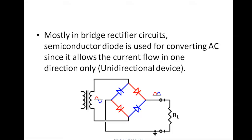First of all, this is a diagram of a rectifier — this is a bridge rectifier. Mostly, a bridge rectifier circuit uses semiconductor diodes for converting AC, since it allows the flow of current in only one direction. In our rectifier concept, we are using a diode, which is a semiconductor device that allows current in one direction. A diode has two types of biasing: forward biasing and reverse biasing.